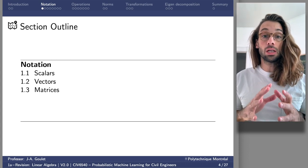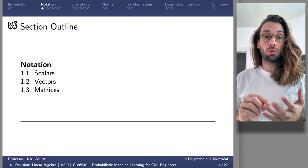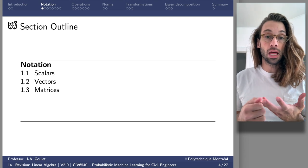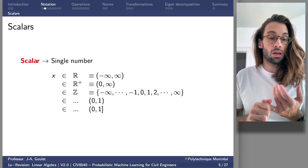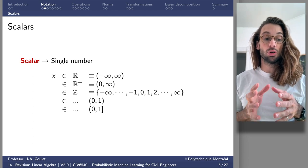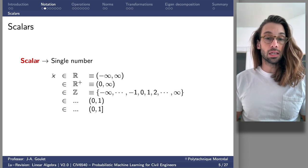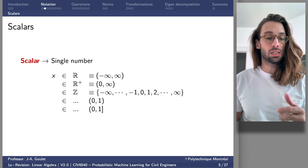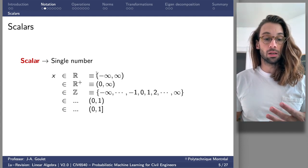First, with respect to notation. The basic things we're going to cover are scalars, vectors, and matrices. When we refer to a scalar, we refer to a single number. For instance, lowercase x would be a scalar. We can say that scalar belongs to the real space — from minus infinity to plus infinity.